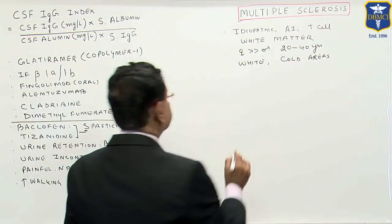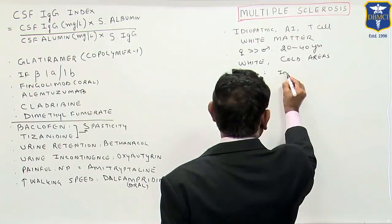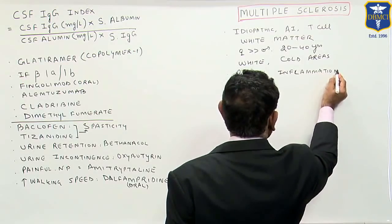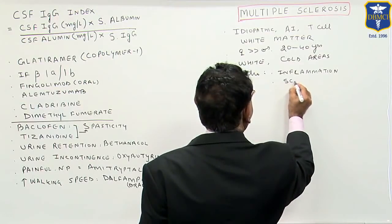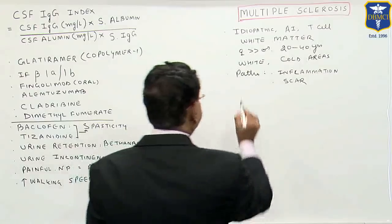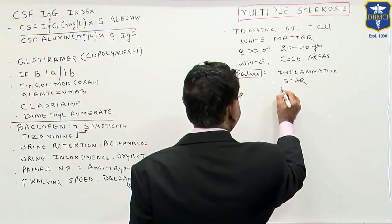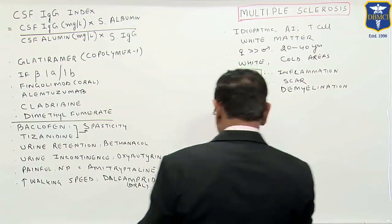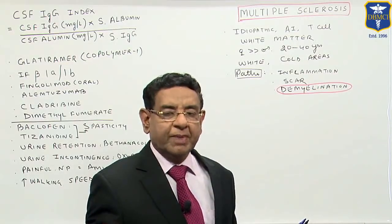What is the basic pathology? The basic pathology is inflammation followed by scarring in the white matter. The main problem is demyelination — this is the most characteristic feature in the pathology. So it is primarily a demyelinating disorder.